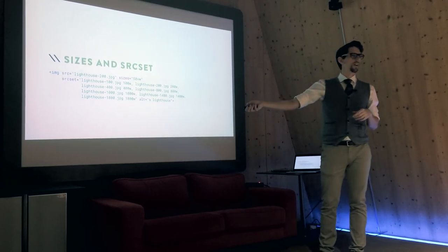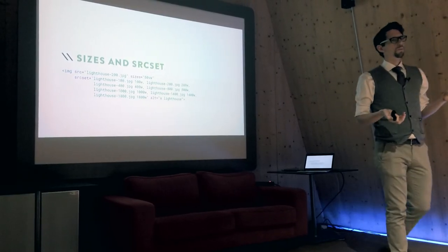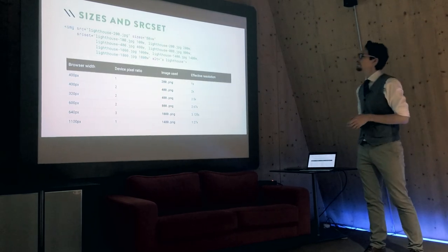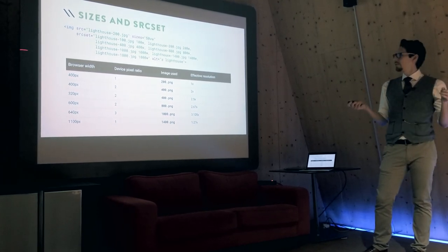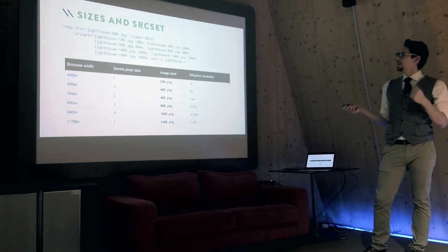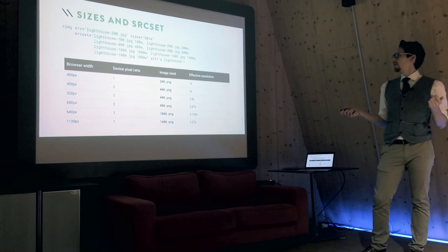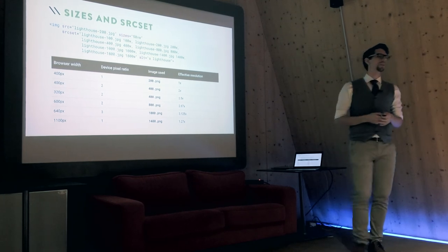The sizes attribute can be simple or more complex. For example, this one says the image is always 50% of the browser width — vw stands for viewport width — and then you let the browser figure out which image it actually needs. If the browser width is 400 pixels, 50% would be 200 pixels, so the browser automatically picks the 200 pixel image. If the device pixel ratio is 2 (retina), it will automatically choose the 400 pixel image. The only things you have to provide are a list of source images and how big the image will be in your design.